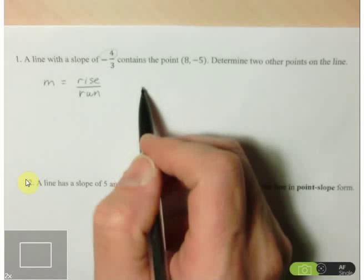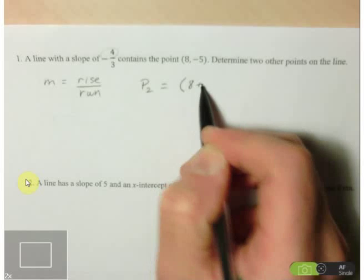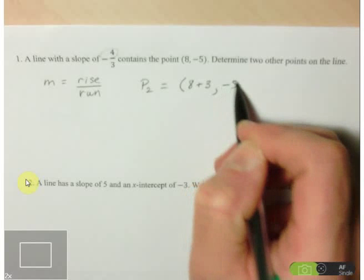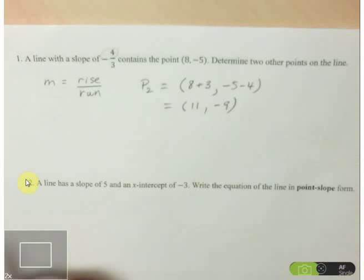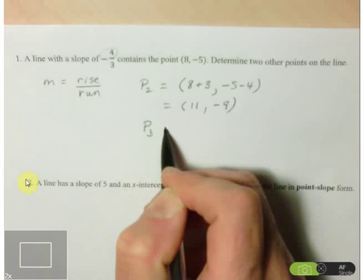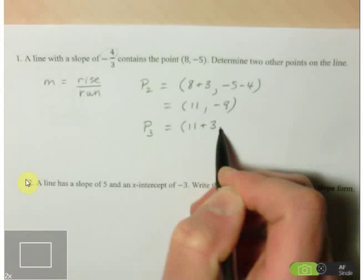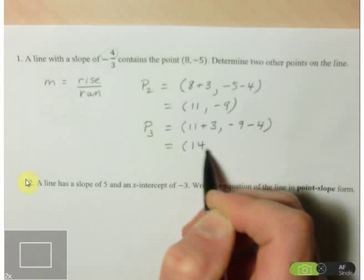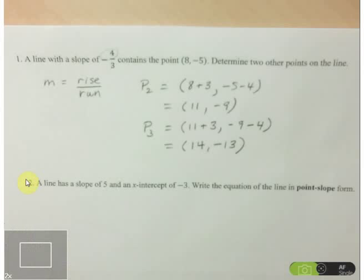To generate a second point, I take my x value and increase it by 3 — so 8 + 3 = 11 — and the y value goes down by 4: negative 5 minus 4 gives us the second point (11, -9). Then we repeat to find a third point: as x goes up by 3 to 14, and negative 9 minus 4 is negative 13. So there you have it — finding other points on the line given a slope and a point.